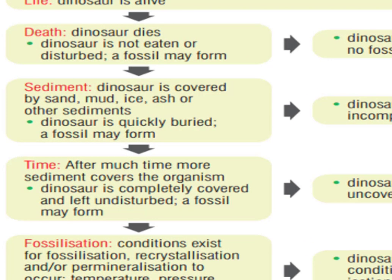How is a dinosaur's fossil formed? First, there must be death of the dinosaur within water or close enough to water to be covered before the dead body is eaten, disturbed, or rotten. Then there must be sedimentation — the dead body of the dinosaur must be covered by sand, mud, ice, ash, or other sediments — quickly burying it. Fossilization is then ongoing.